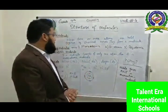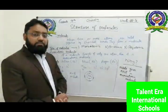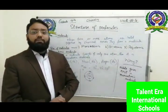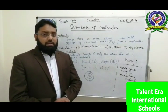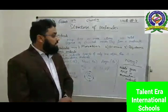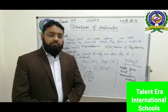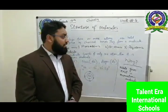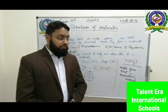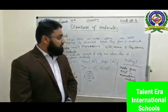Now, types of molecules. The first type is monoatomic molecules — some molecules consist of only one atom. Some molecules consist of two atoms, so those molecules are called diatomic molecules. And some molecules are formed by more than two atoms, so that type of molecules is called polyatomic molecules.